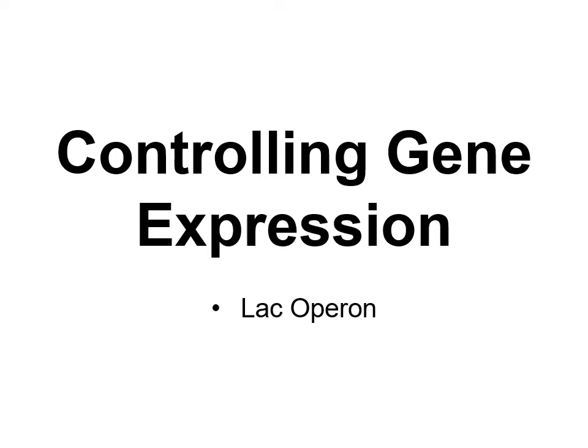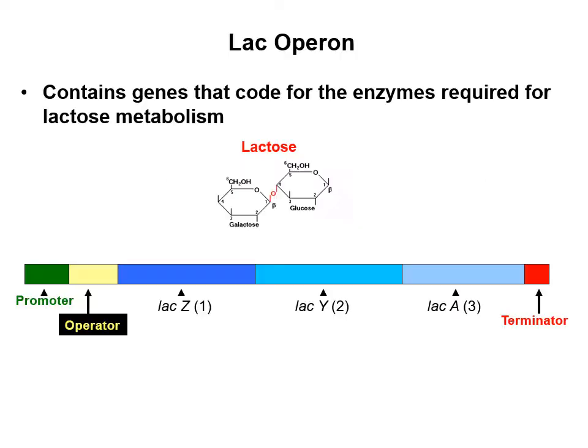Controlling gene expression: the lac operon. The lac operon contains genes that code for the enzymes required to break down lactose. Lactose can be used as an energy source. Glucose is preferred, but lactose is another option, and so there are genes that allow bacteria to break down lactose.